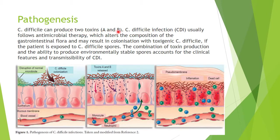Clostridium difficile infection usually follows antimicrobial therapy — therapy by antibiotics like azithromycin — and this will alter the composition of the gastrointestinal flora. The gastrointestinal flora, the bacteria present in the large bowel, will die and will instead be replaced by the toxigenic Clostridium difficile.